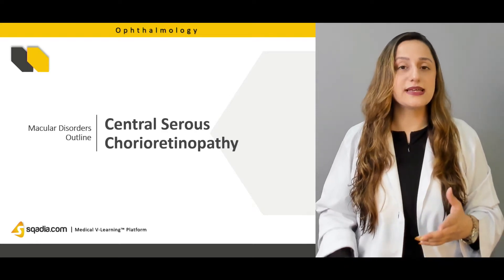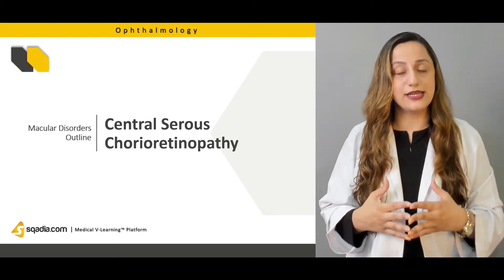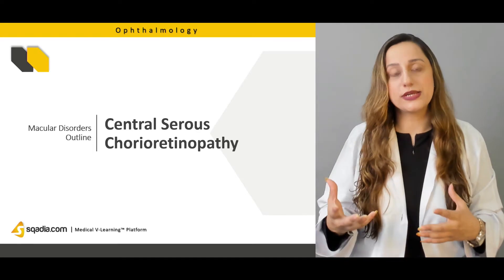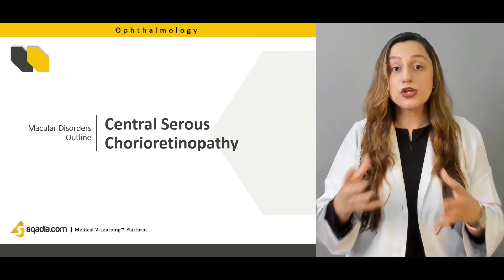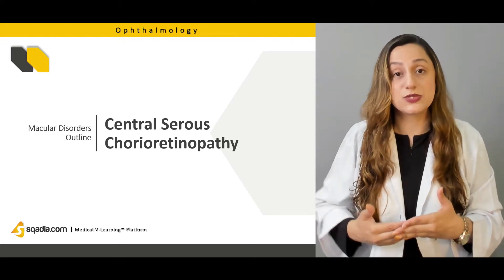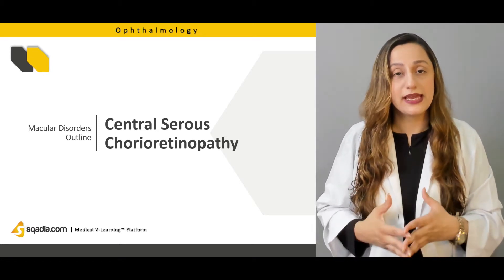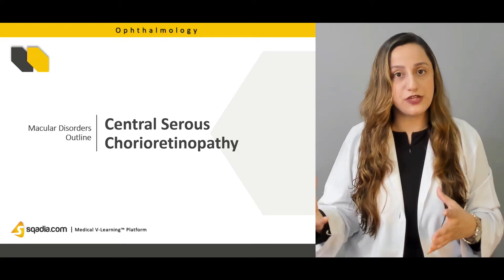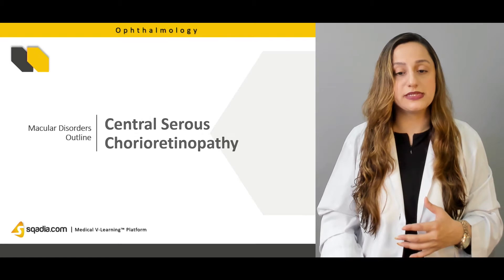Moving on, we'll be discussing central serous chorioretinopathy. Sometimes the choroid plexus is involved along with the retina, and there are pathologies related to both the choroid plexus and the retina, with the sclera sometimes involved as well. The specific clinical features of this serious chorioretinopathy will be discussed.